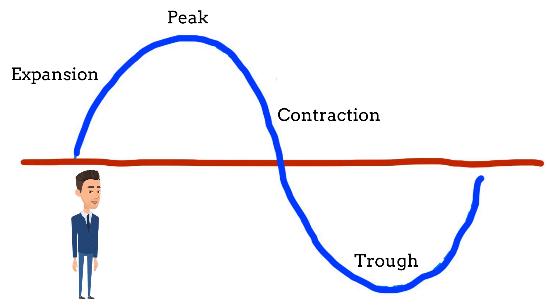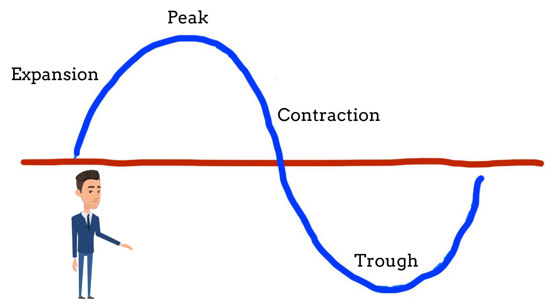Contraction — this is the phase where economic activity starts to slow down, and there is a decline in output, employment, and income. In this phase, businesses are experiencing lower demand, and consumer confidence is usually weak.